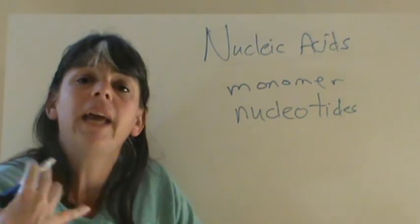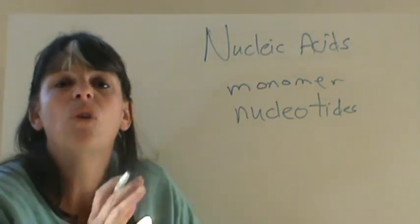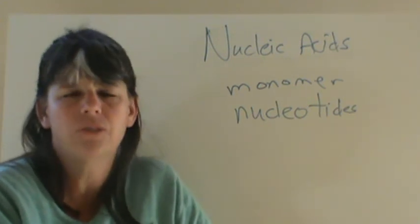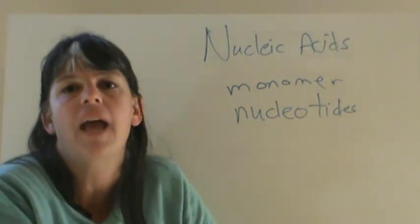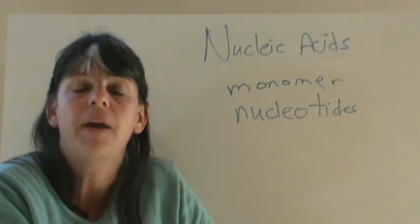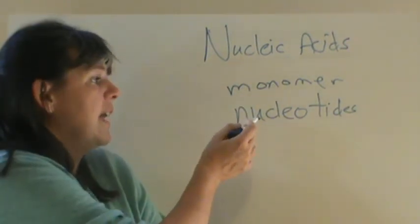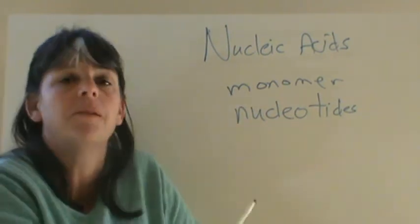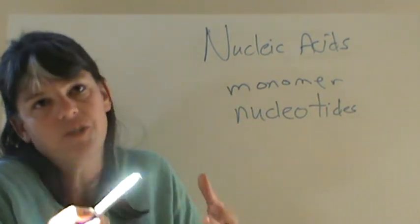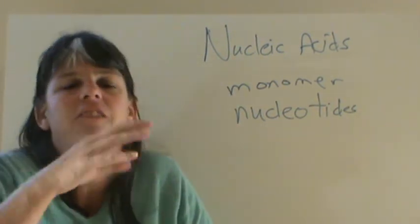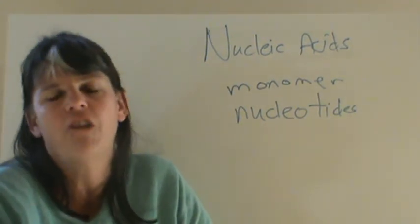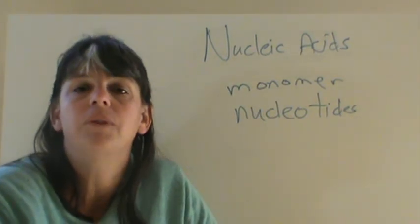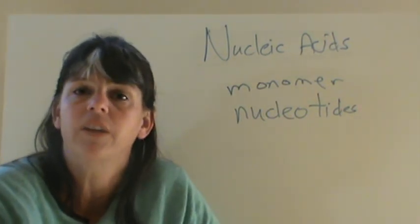Now, when we get into the genetics unit, we'll go into much more detail about the structure of nucleotides and really break them down. We'll learn a lot more about how they hold together and how they are the puzzle pieces. But, for today, just knowing that a long series of nucleotides is what makes up the monomer, or monomer is the nucleotide, and the long chain is what makes up the polymer, what we call DNA or RNA. So, that's it for our nucleic acids, and we'll review all of this very soon.